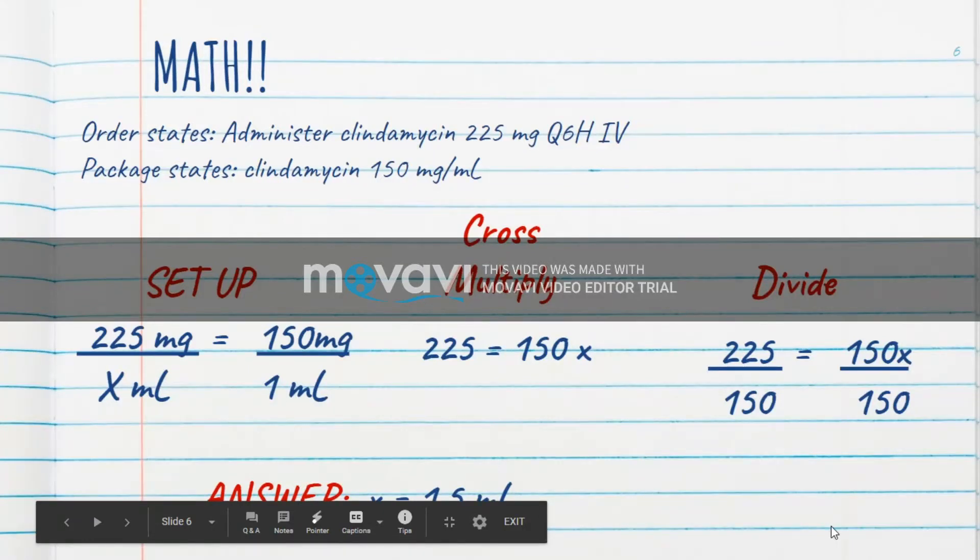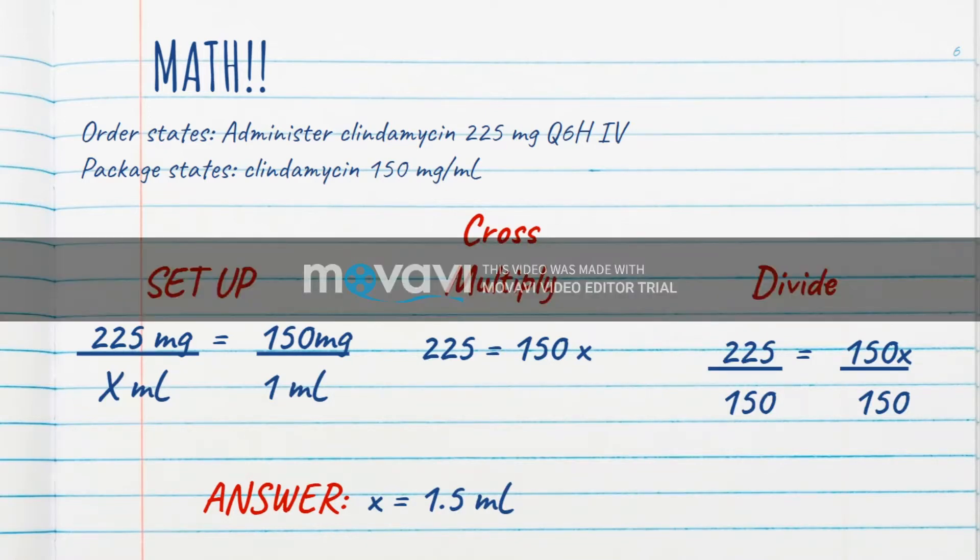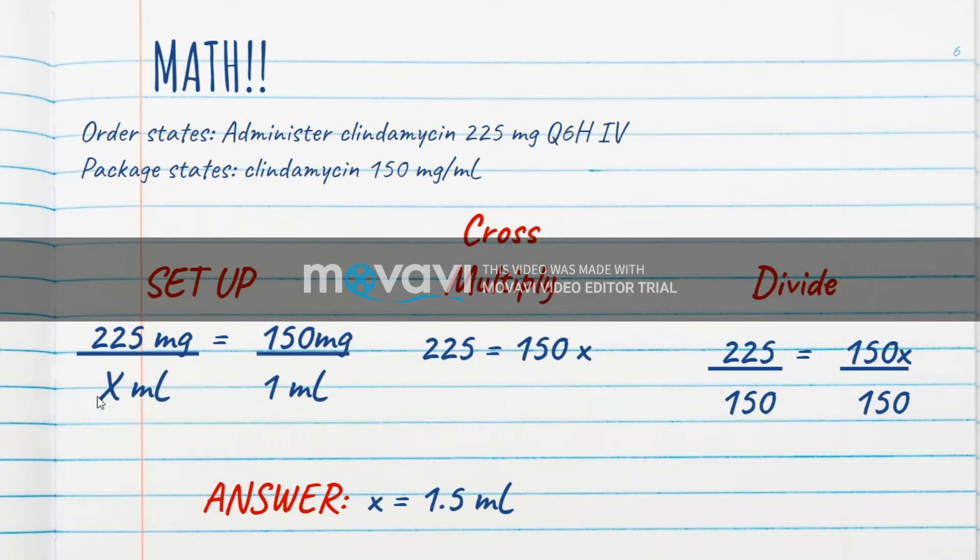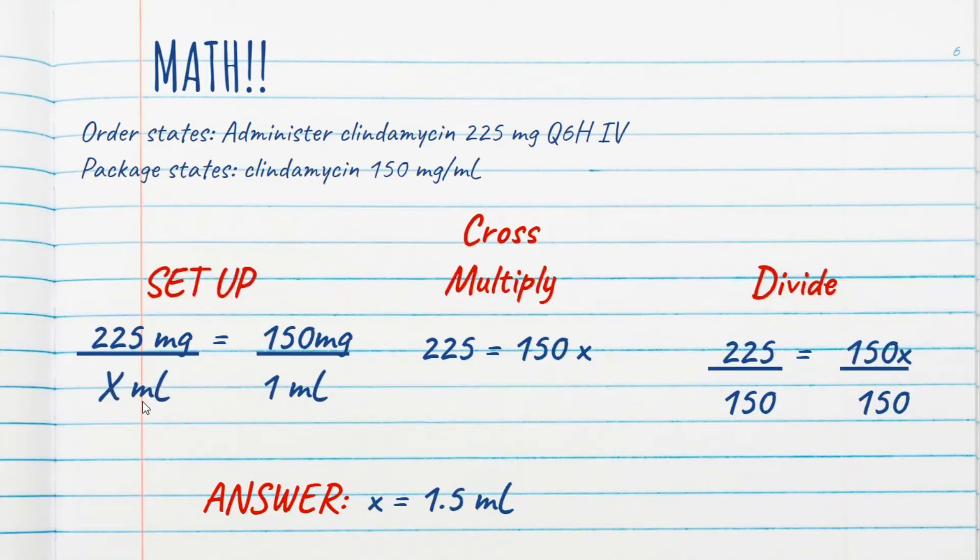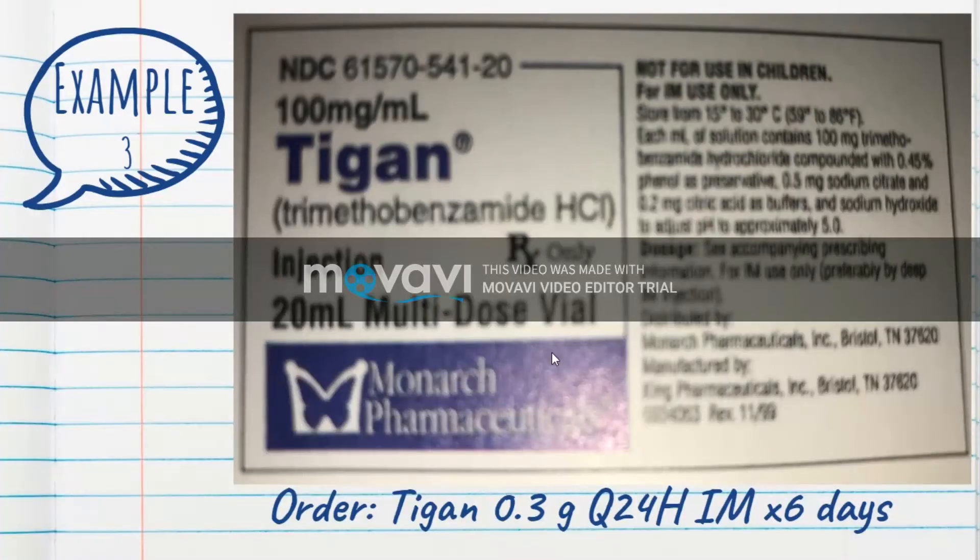So now we do the math. If the order states administer clindamycin, 225 milligrams, every 6 hours, IV, and our package states clindamycin, 150 milligrams per milliliter, we have to set it up. In a ratio and proportion, it would be 225 milligrams over x, because that's what we're solving for. That's what our order says that we don't know the milliliters for. Our package tells us that we have 150 milligrams in 1 milliliter. We cross multiply, and we get 225 equals 150x.